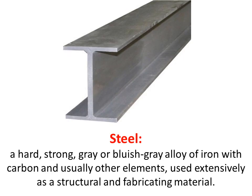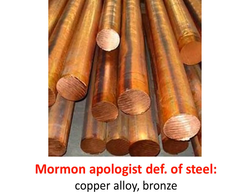The next one is steel. There was no steel in Book of Mormon times in the Americas. Steel is a hard, strong gray or bluish-gray alloy of iron with carbon and usually other elements, used extensively as a structural and fabricating material. But since there was no steel during Book of Mormon times, Mormon apologists define steel as a copper alloy or bronze. That is not steel, folks.